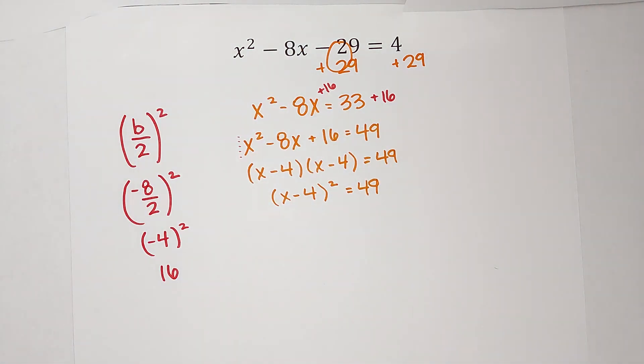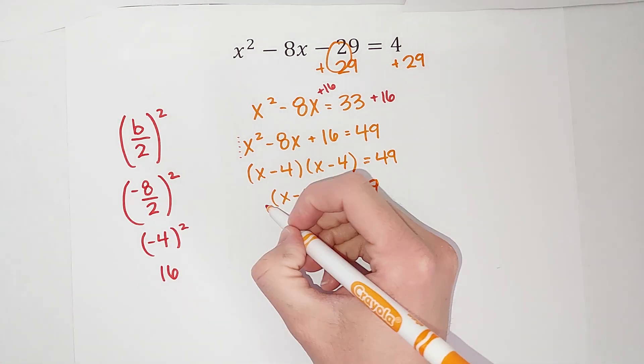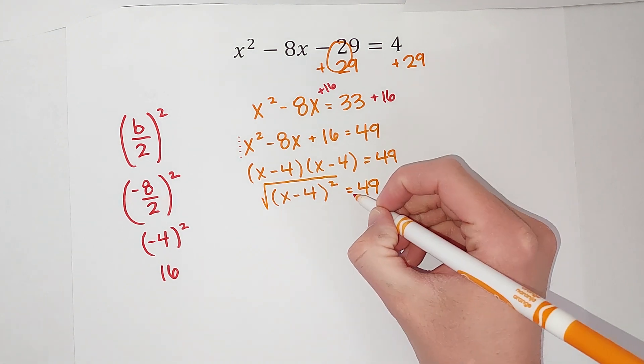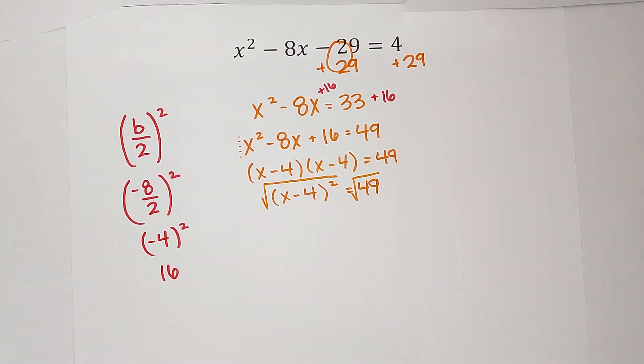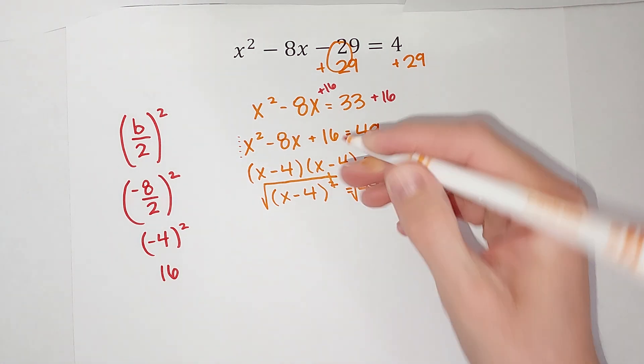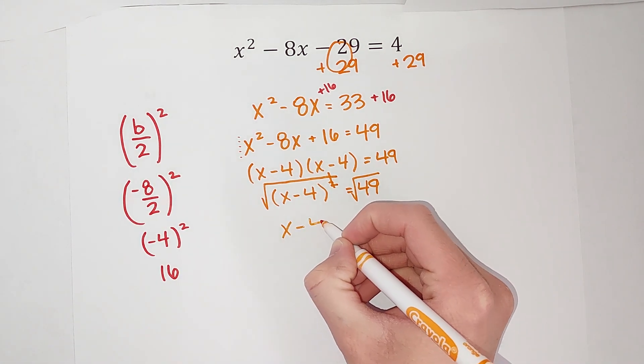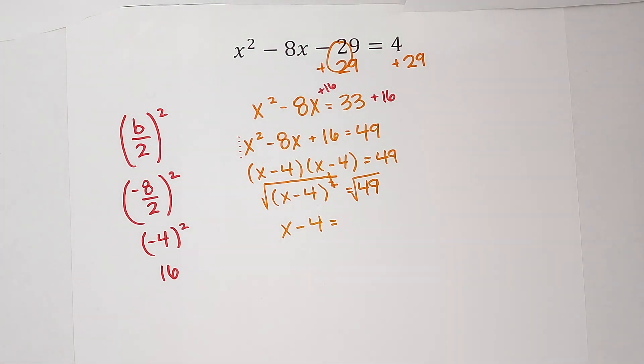From here I'm still just trying to solve for x. So I need to get rid of this squared. To get rid of a squared, I take the square root. But just like always and forever, we need to do it to both sides. When I take the square root of both sides, the squared and the square root cancel, so on this side I'm just left with x minus 4. Now this is equal to the square root of 49, which you're probably thinking is 7, and you're totally right.